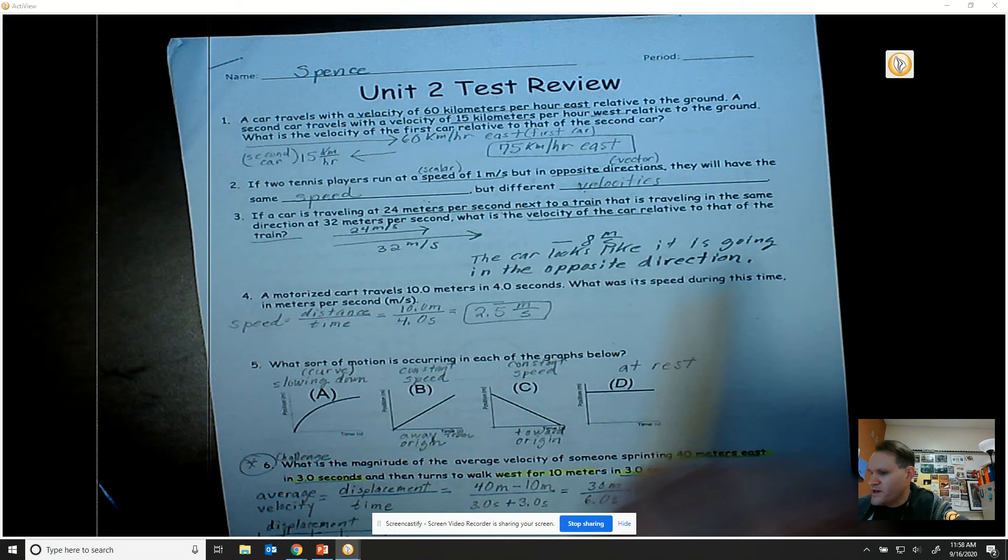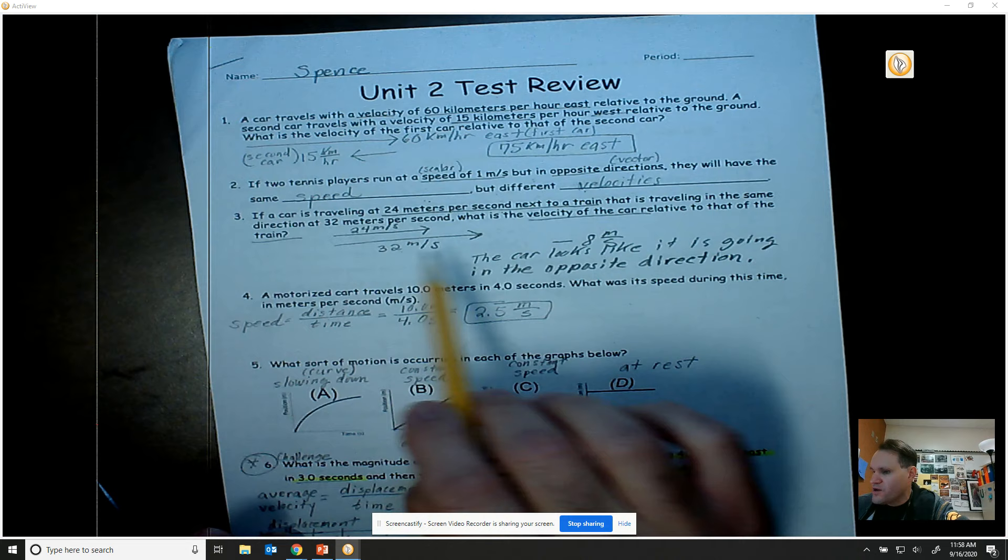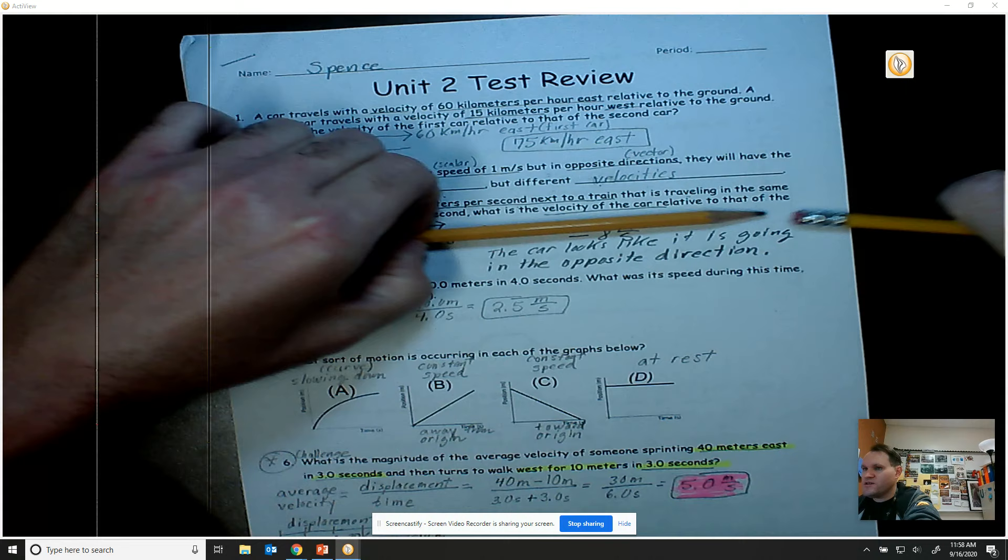Notice they're both going the same direction - train's going 32 meters per second, car going 24 meters per second. So if you're on the train you're going to end up passing the car, and when you pass the car it's going to be as if the car and the train are going opposite directions.